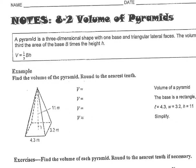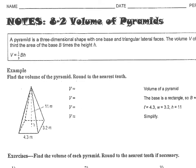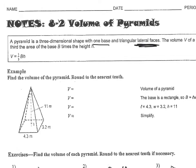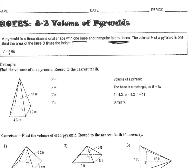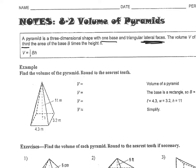Volume of pyramids. A pyramid is a three-dimensional shape with one base and triangular lateral faces — triangles on the sides. The volume V of a pyramid is one-third the area of the base times the height of the whole pyramid.